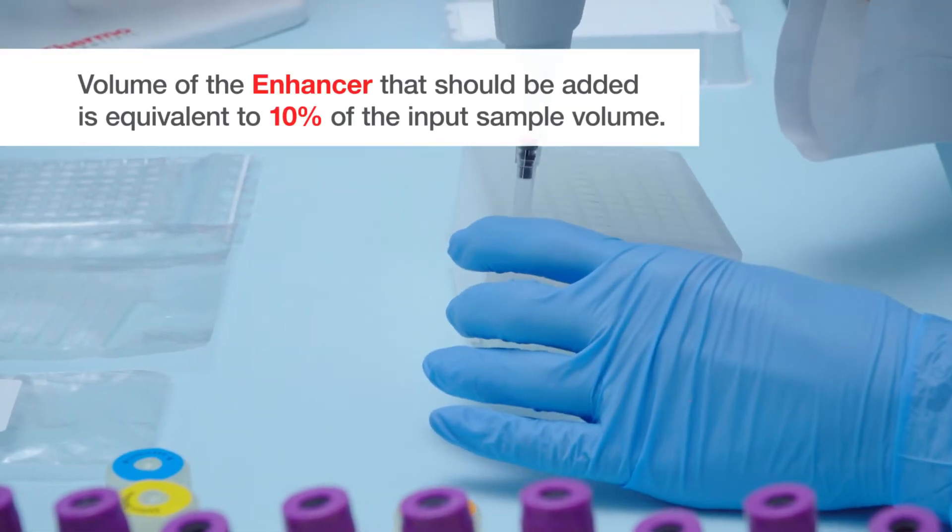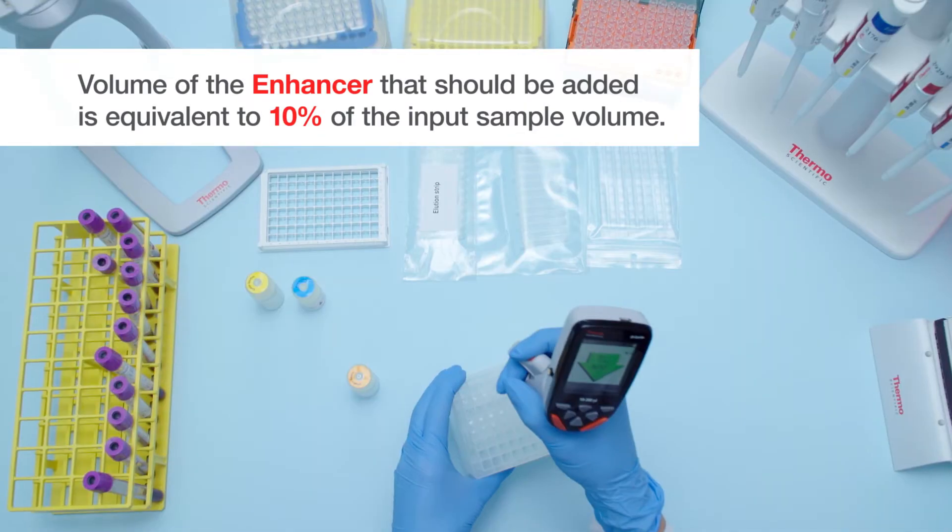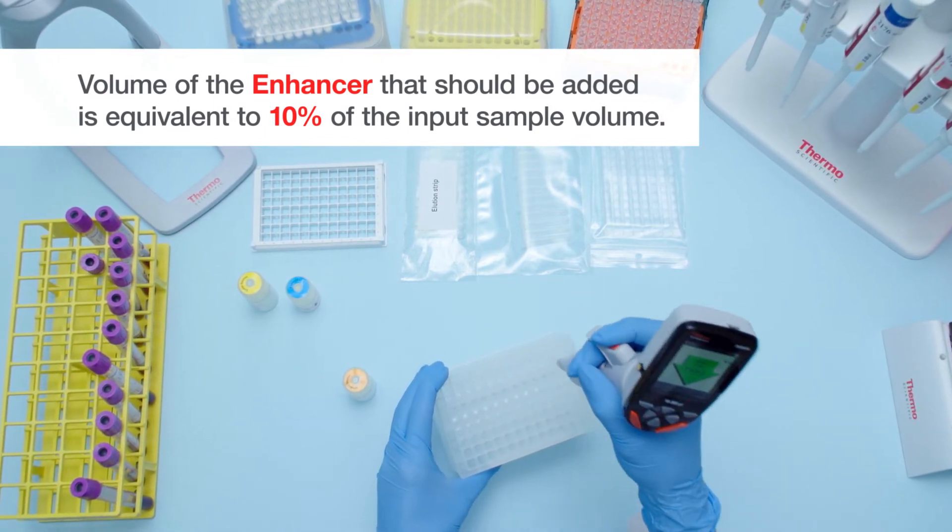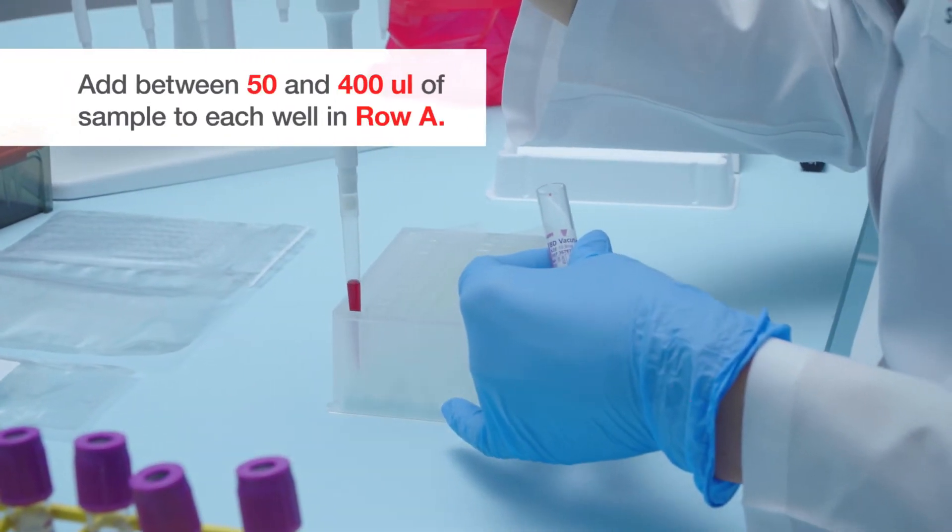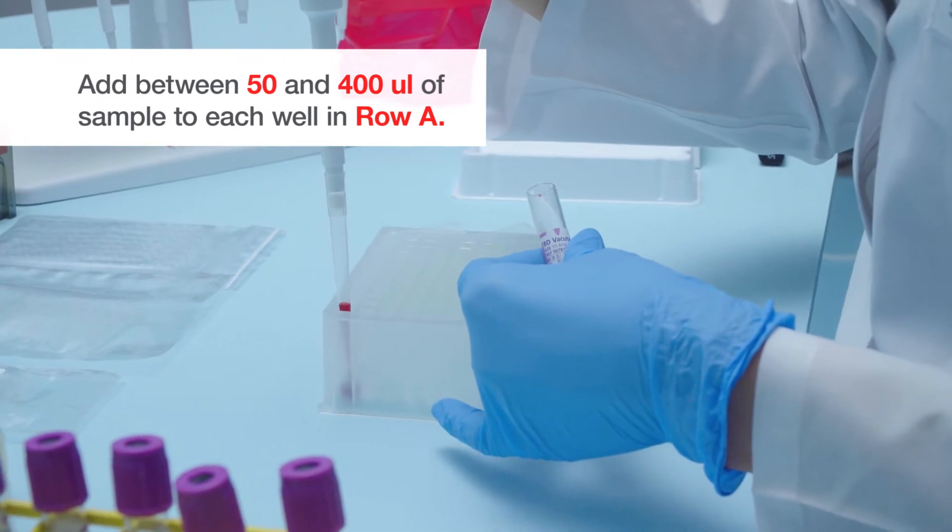Pipette Enhancer into row A. Then, pipette up to 400 microliters of blood into row A.